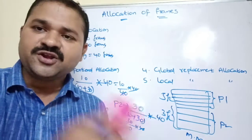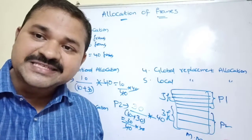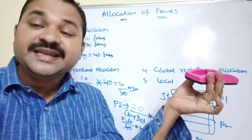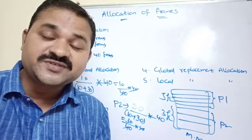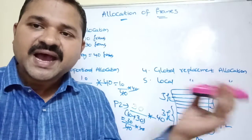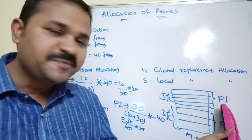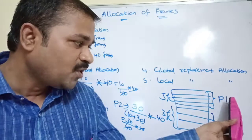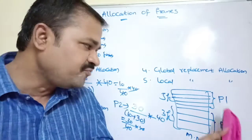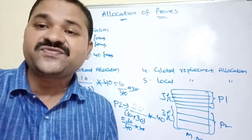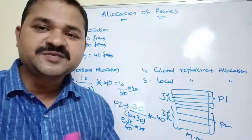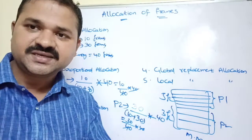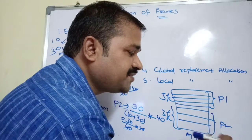Consider a high priority process and a low priority process. A high priority process can take a frame from a low priority process. As a result, the number of frames for the higher priority process increases, whereas the number of frames for the lower priority process decreases. So the number of page faults for the high priority process will decrease, because process P1 is getting frames from the lower priority process P2, and more frames mean a lower page fault rate.